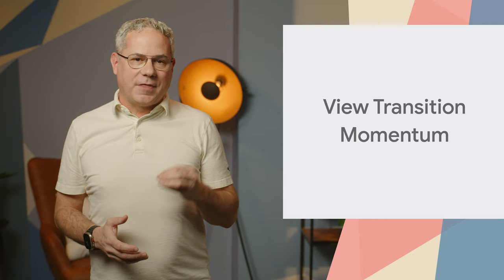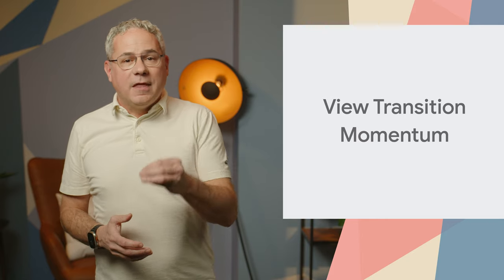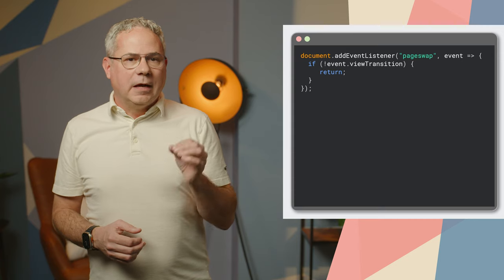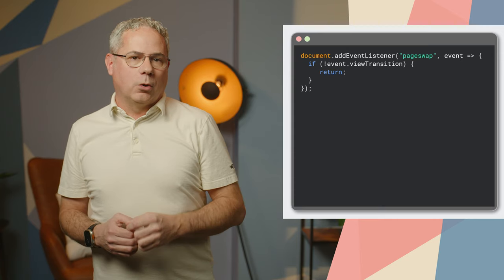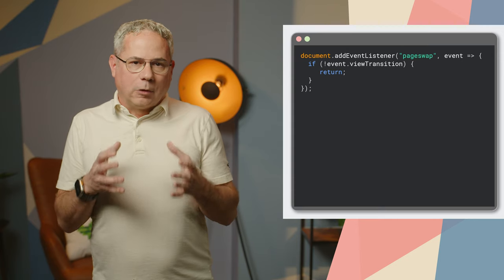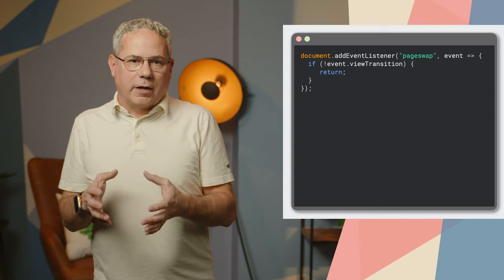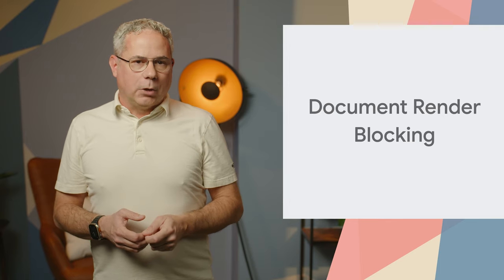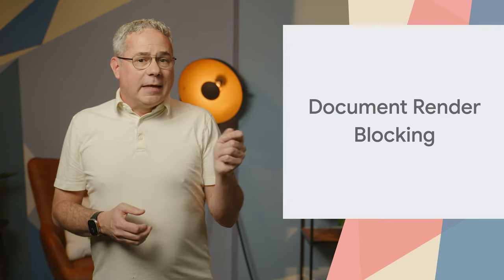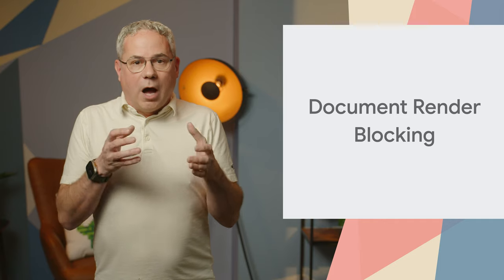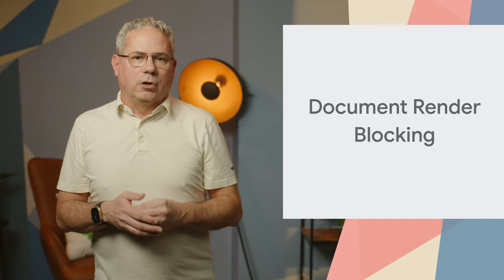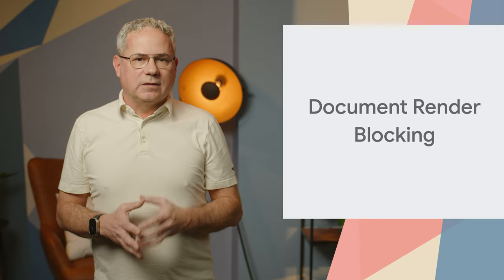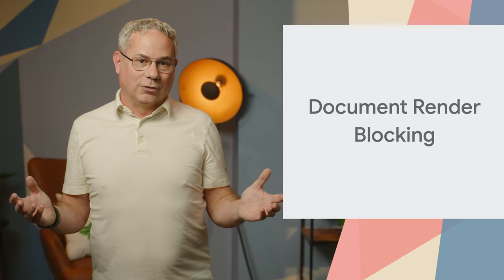I'm excited about the ViewTransition API, and there are two new APIs that have landed. The PageSwap event is fired on a document's window object when a navigation will replace the document with a new document. And DocumentRenderBlocking enables you to block the rendering of a document until all of the critical content has been parsed, ensuring a consistent first paint across all browsers.